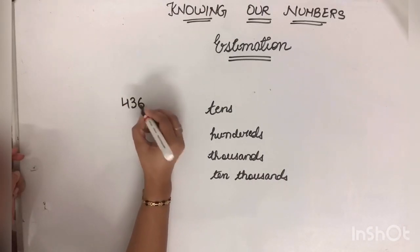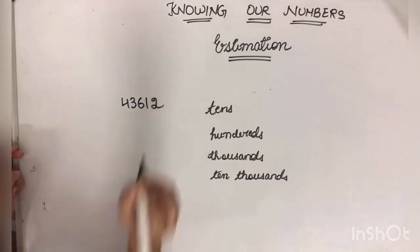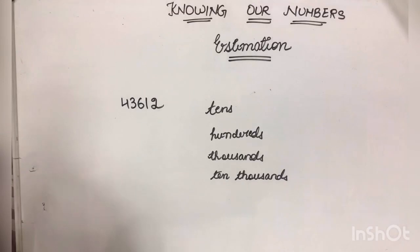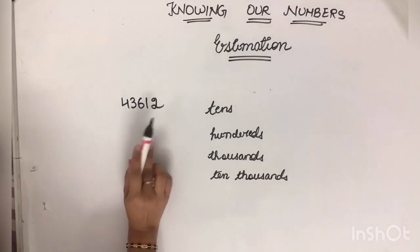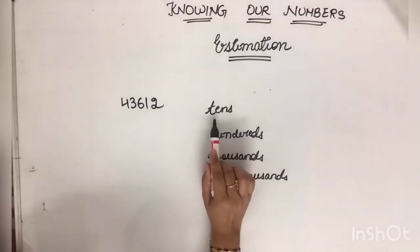43612. So this is an example. I have to take an approximate value of 43,612 by rounding it off to nearest tens.